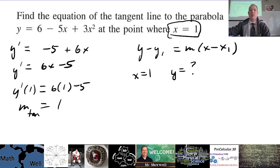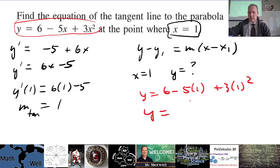So if x equals 1, what does y equal? Well, we have to go back to the original equation to find that out. And so y equals 6 minus 5 times 1 plus 3 times 1 squared. Y equals 1 plus 3 is 4. I'm doing this real quick, so if I miss something, let me know.